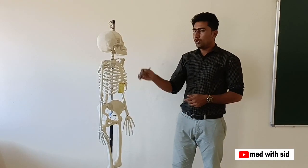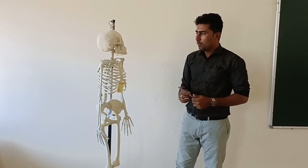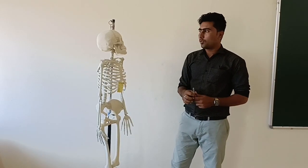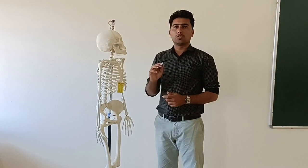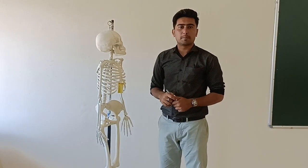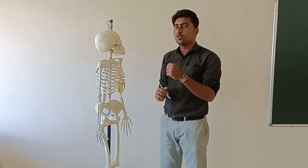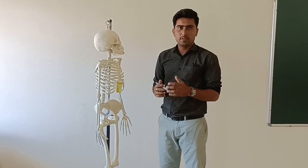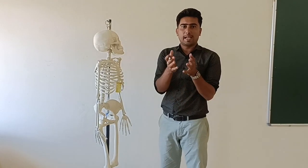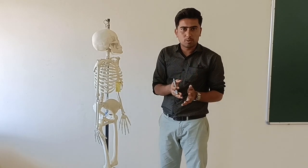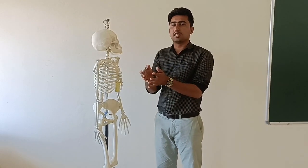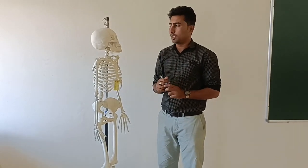206 bones are present in the human body. We are going to see the skeletal system, starting from the skull. In the skull, 22 bones are present, which are divided into 2 sections: the cranium bones and the facial bones. The cranium is the head bones and the facial bones are the front bones.